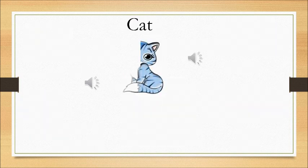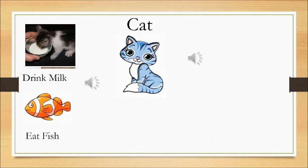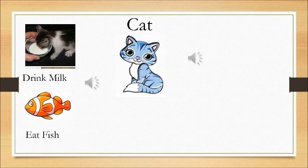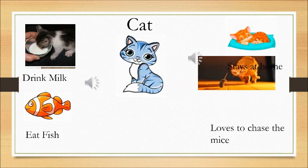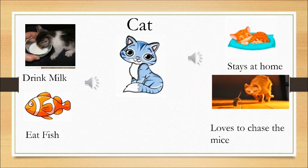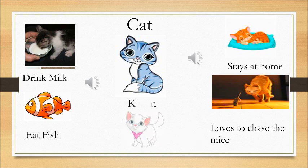Now the next pet animal we are doing is the cat. And the cat loves to drink milk and eat a lot of fish. It stays in a house. Can you see the small cushion that it is sitting in? And one thing a cat loves to do what? It loves to chase the mice.